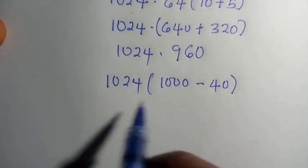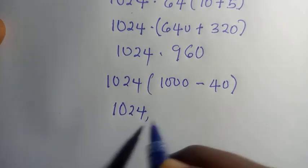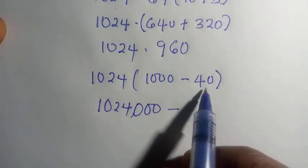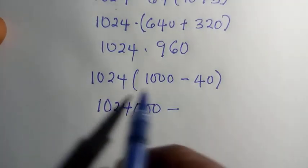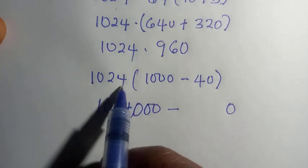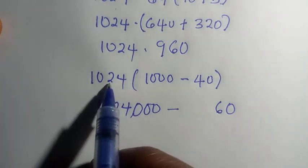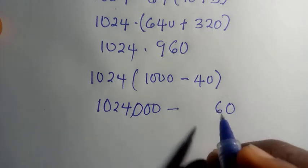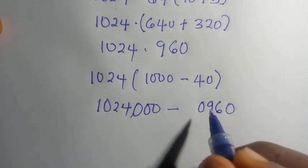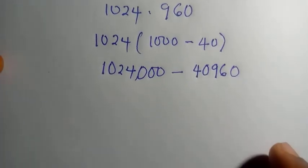We expand this: 1024 multiplied by 1000 gives us 1,024,000. Then we compute 1024 multiplied by 40. Multiplying digit by digit: 4 multiplied by 4 is 16, write 6 carry 1; 4 multiplied by 2 is 8 plus 1 is 9; 4 multiplied by 0 is 0; 4 multiplied by 1 is 4. So 1024 multiplied by 40 equals 40,960.